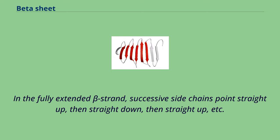In the fully extended beta strand, successive side chains point straight up, then straight down, then straight up, etc.